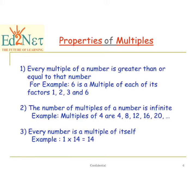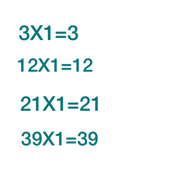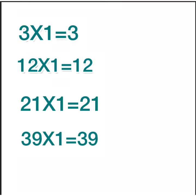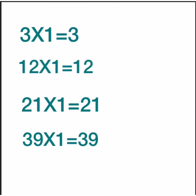Finally, the third property is: every number is a multiple of itself. It means children that every number will be a multiple of its own. For example, 3 multiplied by 1 is 3, 12 multiplied by 1 is 12, 21 multiplied by 1 is 21, and 39 multiplied by 1 is 39. So by this you can also understand that every number is the smallest multiple of itself.